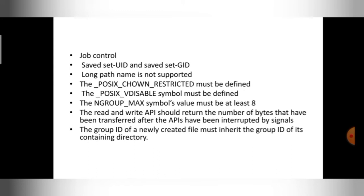Next, the NGROUP_MAX symbol value must be at least eight. This tells you the maximum number of groups you can create. At least eight groups should be creatable if you are using a FIPS standard. If you are using a FIPS standard, you should be able to create at least eight groups.